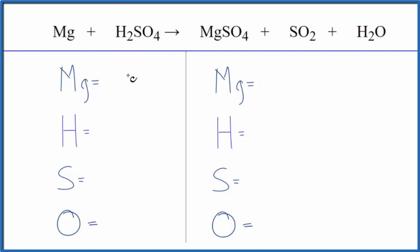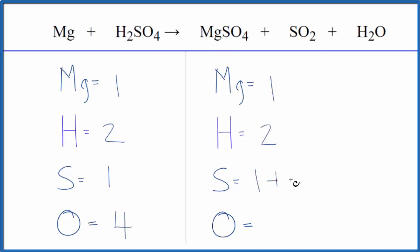Let's count the atoms up and balance the equation. One magnesium, two hydrogens, one sulfur, and four oxygen atoms. On the product side, we have one magnesium, then one sulfur here, plus — don't forget — the other sulfur in the SO2. Two of those oxygen atoms; we have four plus two, that's six, plus the one here — seven oxygen atoms.